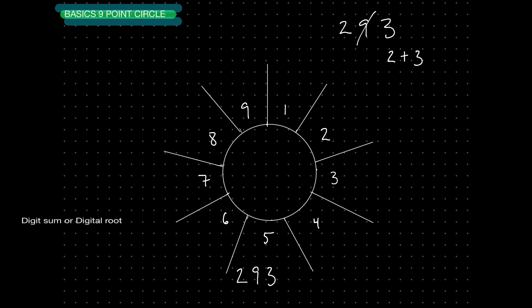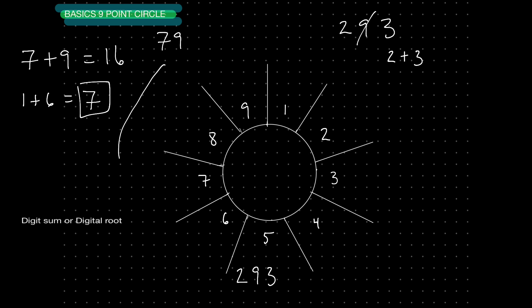Once again, if I have 79: 7 plus 9 gives me 16, and 1 plus 6 takes me back to 7. So 79 is going to land me on spoke number 7. If I have the number 39, that's going to land me on spoke number 3. Why? Because 3 plus 9 equals 12, and taking the digital root of 12 — 1 plus 2 — takes me back to 3.